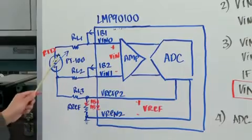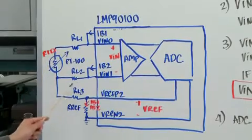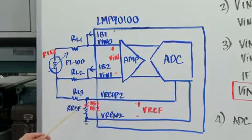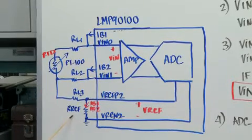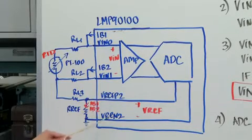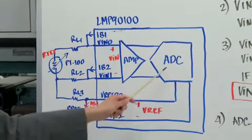And the RTD will be connected in a ratio metric configuration where the bias current will also be sourcing this external resistor for your reference. And this reference RF will be sourcing the Vref for your ADC.